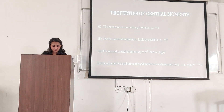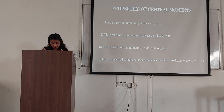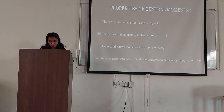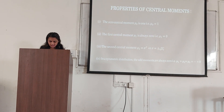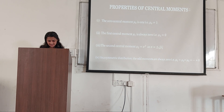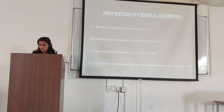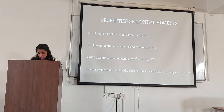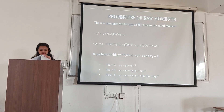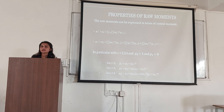The first property of the central moment is always zero. The zeroth central moment is always one. The first central moment mu is always zero. The second central moment is sigma squared. In a symmetric distribution, all odd moments are always zero. The raw moment can be expressed in terms of the central moment.